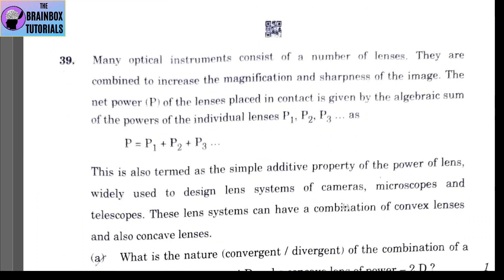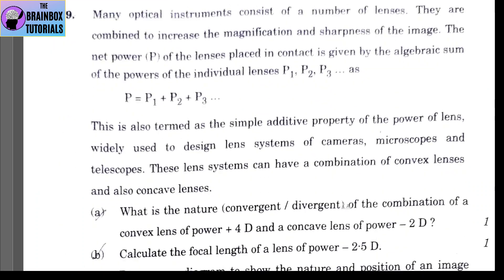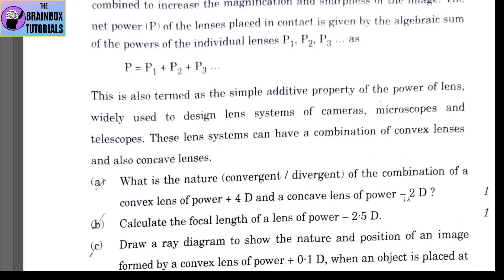Question 39: many optical instruments consist of a number of lenses combined to increase magnification and sharpness. The net power P of lenses placed in contact is given by the algebraic sum P = P₁ + P₂ + P₃. This is known as the simple additive property of the power of lenses.